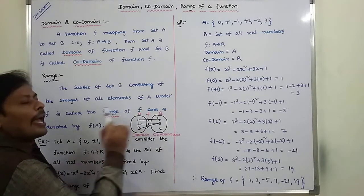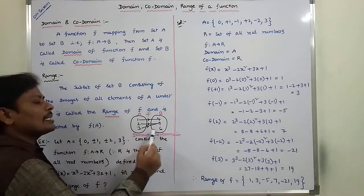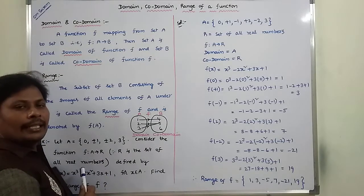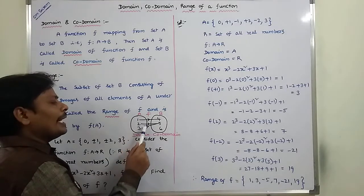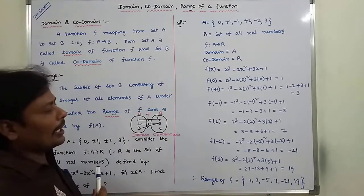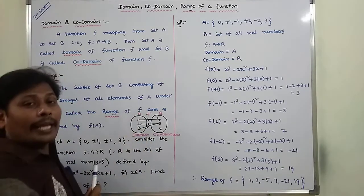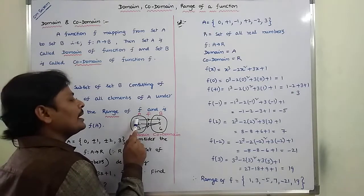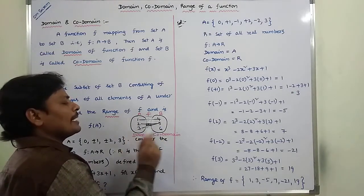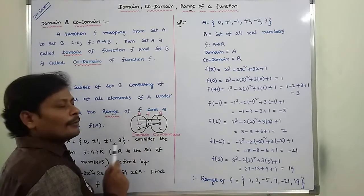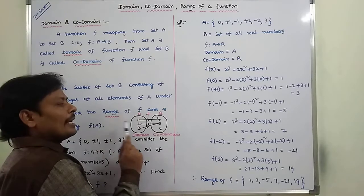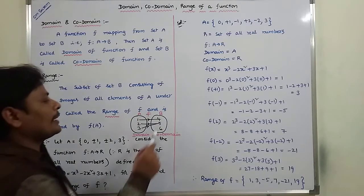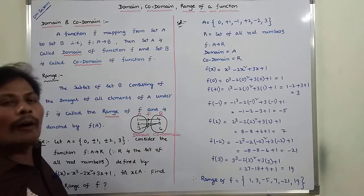A is called as the domain and B is called as the co-domain. Now, what is the range? Range means, for all the elements of set A, what are the images in set B. Here, 1's image is 4, 2's image is 5, and 3's image is 5. So the images are 4 and 5 in set B, and the set {4, 5} is called the range.